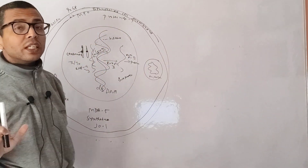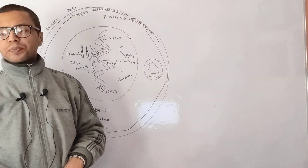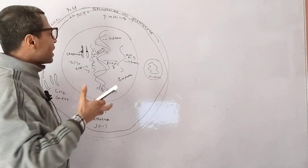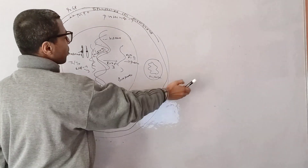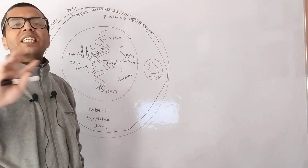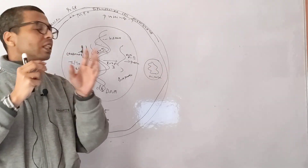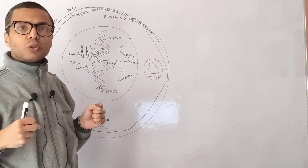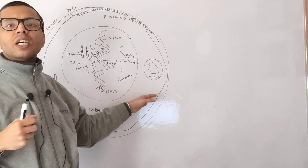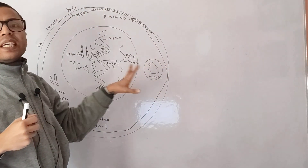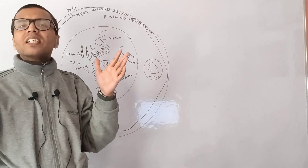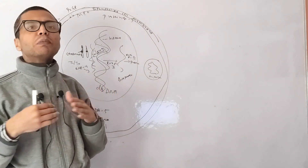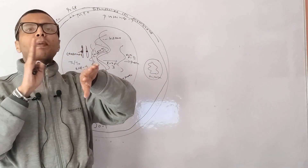In autoimmune disease there is increased inflammation, and due to that the cell undergoes apoptosis. When the cell dies in large numbers, these cytoplasmic and nuclear components get leaked outside. When the blood sees these protein molecules, it treats them as foreign and B cells start producing antibodies against them, because they are normally never exposed in the blood — they are contained inside the membrane.